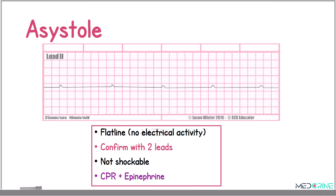Then we have asystole, also called flatline. Asystole indicates no electrical activity in the heart. It is an unshockable rhythm requiring high-quality CPR together with epinephrine administration. You need to confirm the presence of asystole using two leads.